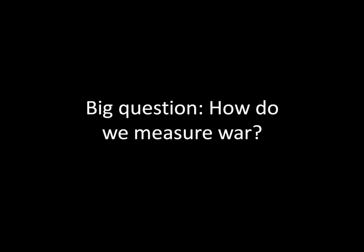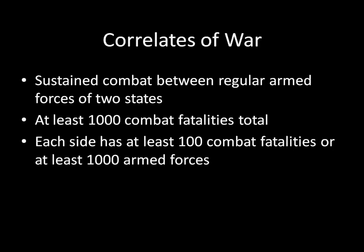Last time we looked at militarized interstate disputes — conflicts that were small scale and didn't even need to involve a casualty. In contrast, the correlates of war dataset looks at larger scale conflicts. The way correlates of war defines an interstate conflict is as sustained combat between regular armed forces of two states, with at least 1,000 combat fatalities in total, and with each side having at least 100 combat fatalities on its own, or at least 1,000 armed forces involved in the conflict.